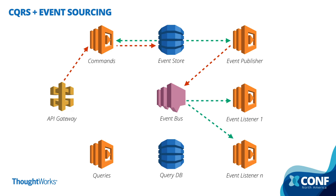Next, the consumers of that particular event will be notified immediately, and some of them will be updating the query representation of the entities on the query database, which is a denormalized version of the entities in our domain optimized for search. The last function we can implement here would be a query function, which has the responsibility of reading data from the query database and serving it back to the API callers.